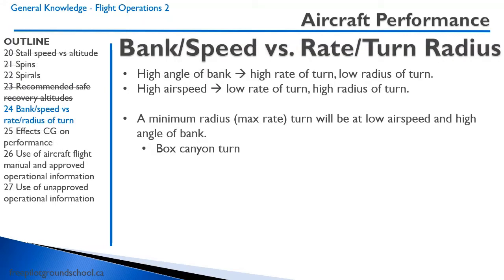When in a turn, a high angle of bank results in a high rate of turn and a low radius of turn — a tight turn. A high airspeed results in a low rate of turn and a high radius — a big wide turn. Therefore, a minimum radius or maximum rate turn will be at low airspeed and high angle of bank. This is also called a box canyon turn — used if you needed to turn around inside a canyon.